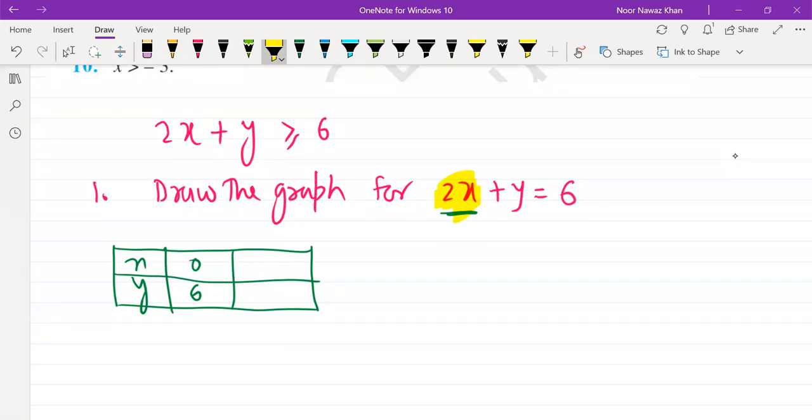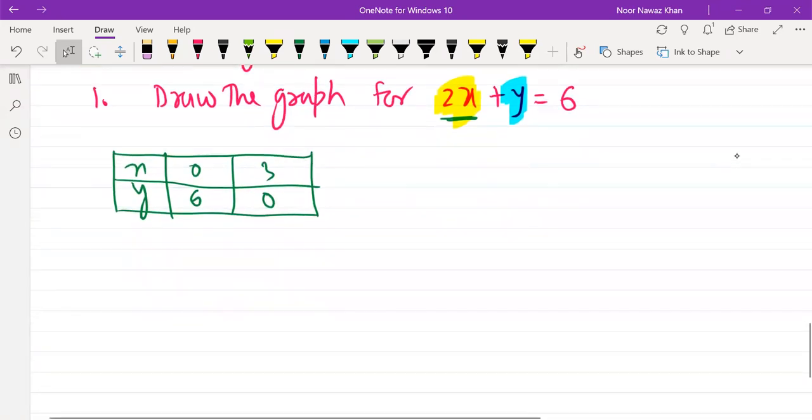Now, if y is 0, then how much is x? 3. Just think so. You don't need this table. You won't get it in the book. So what do we do? Now, we will draw it directly.